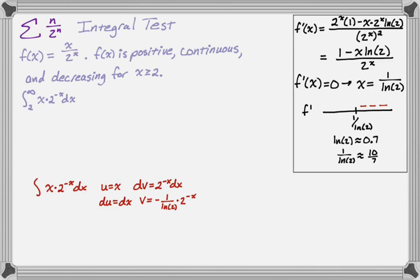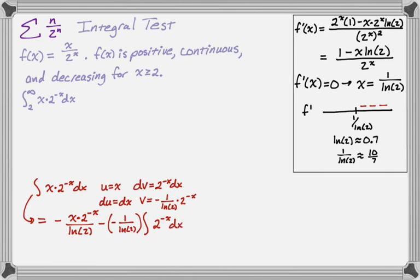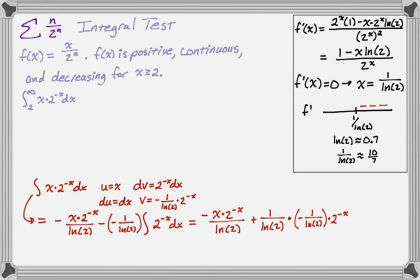Now doing integration by parts — maybe not the best choice for this series test, but you get to practice a lot of skills. The formula gives uv minus the integral of v du. So that's x · [−1/(ln 2) · 2^{-x}] minus the integral of [−1/(ln 2) · 2^{-x}] dx. Pulling out the −1/ln(2), I need to integrate 2^{-x} again, which gives another −1/(ln 2) · 2^{-x}. So I end up with a plus sign because of minus times negative, picking up another factor of −1/ln(2), giving −x/(ln 2 · 2^x) − 1/(ln²2 · 2^x), plus C.